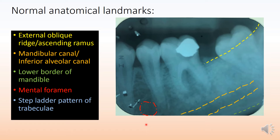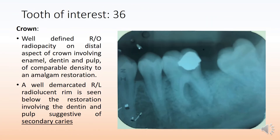You also see a step-ladder pattern of trabeculae, which is again very typical of the mandibular molar region. Moving on, let's look at the tooth of interest. Visibly, we can see that the one particular tooth of interest is the 3-6.